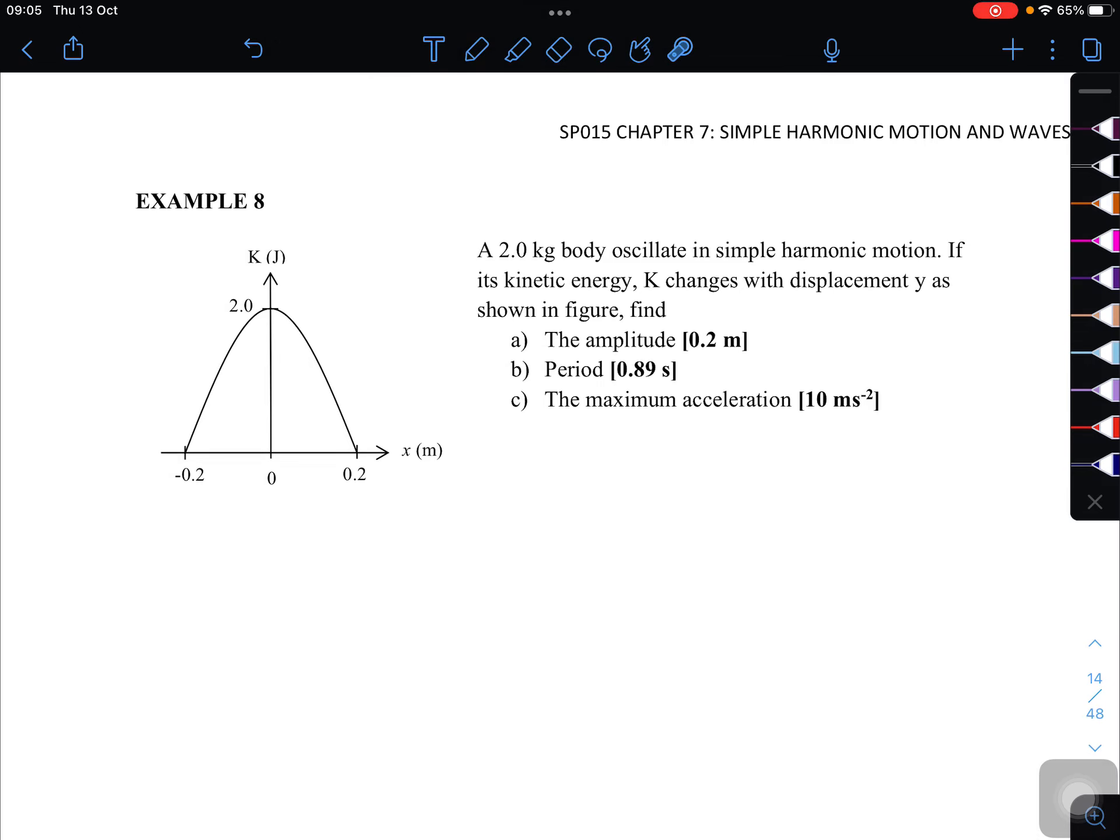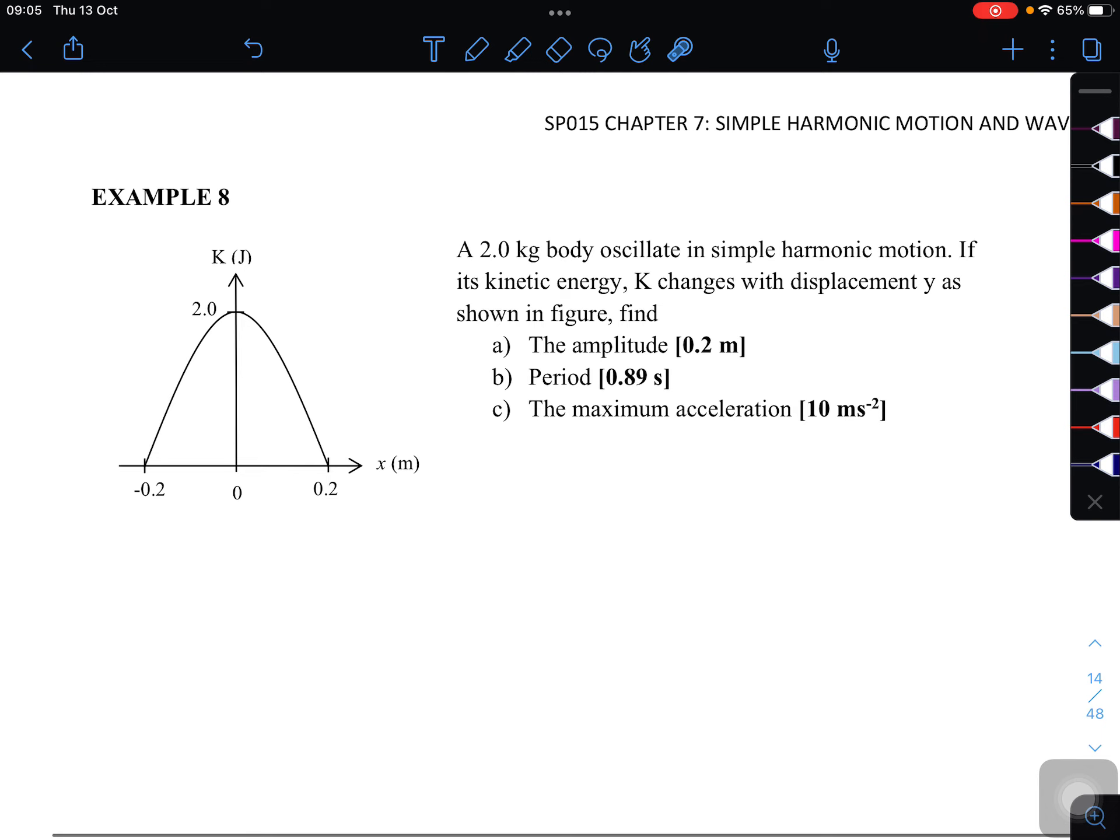Okay, next one, let's look at Example 8. A 2 kg body oscillates in simple harmonic motion. If its kinetic energy K changes with displacement Y as shown in figure, find the amplitude, the period, and the maximum acceleration.